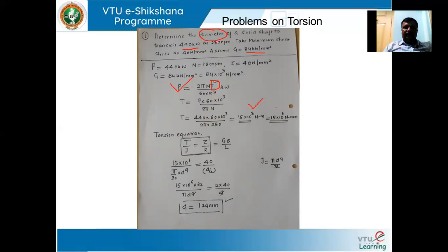Since we don't have the angle of twist, we design based on strength using T by J equals tau by R. Substituting T equals 15 into 10 to the power of 6 Newton millimeters, J equals pi by 32 d to the fourth, and tau equals 40 with R equals d by 2, solving gives the diameter as 124 mm. When you know the power transmitted, you find the torque and then use the torsion equation to find the shaft diameter.